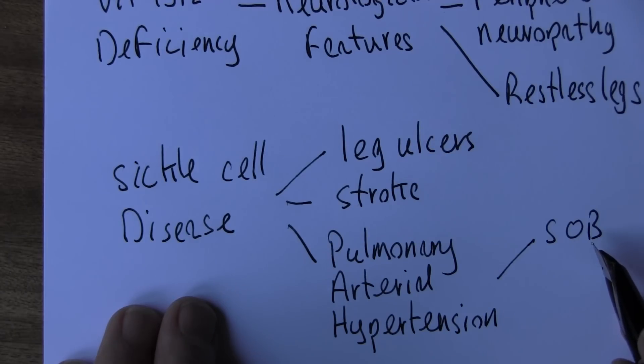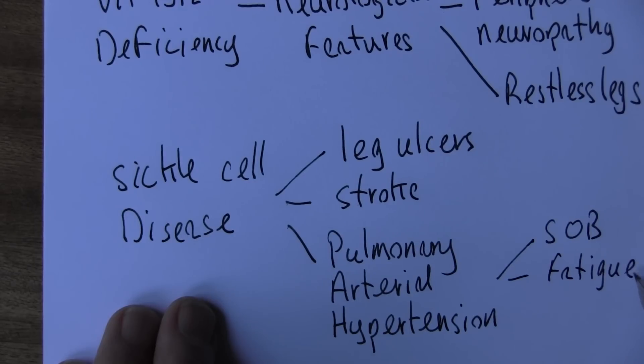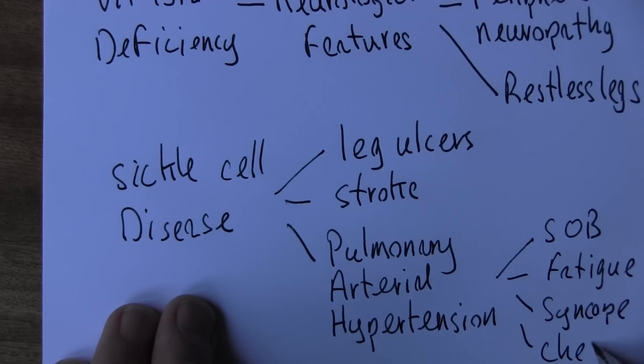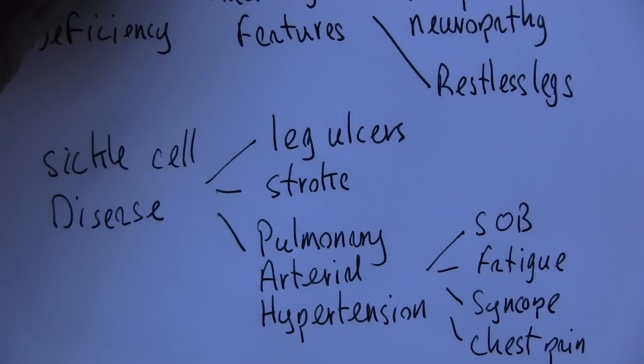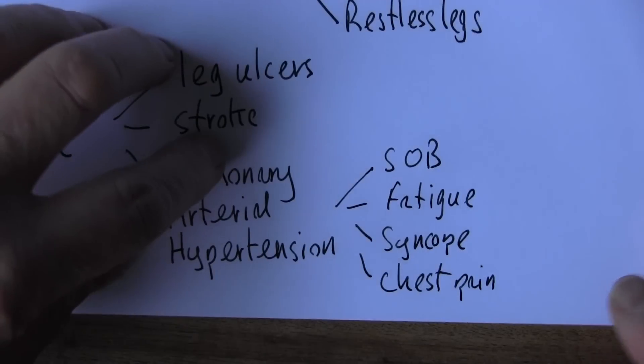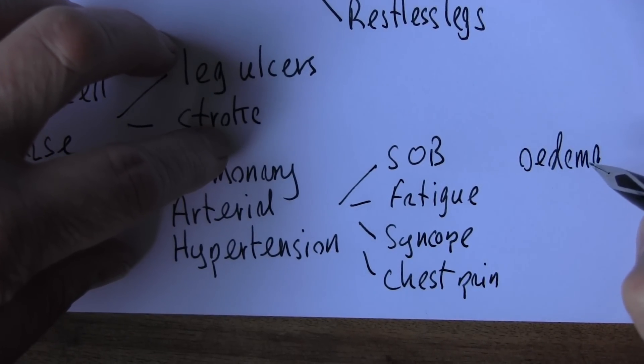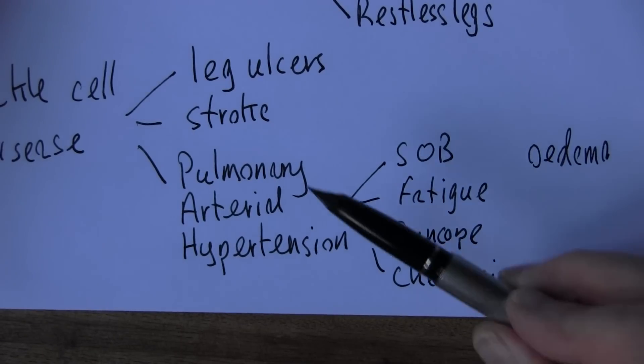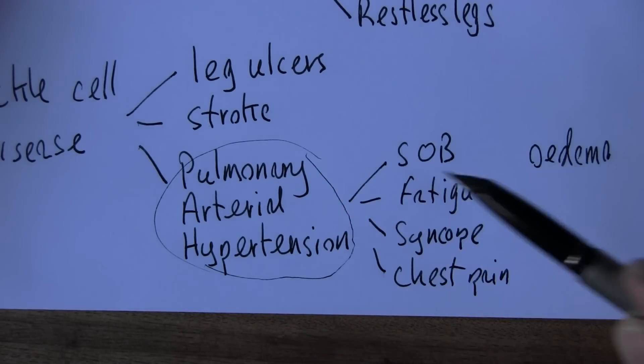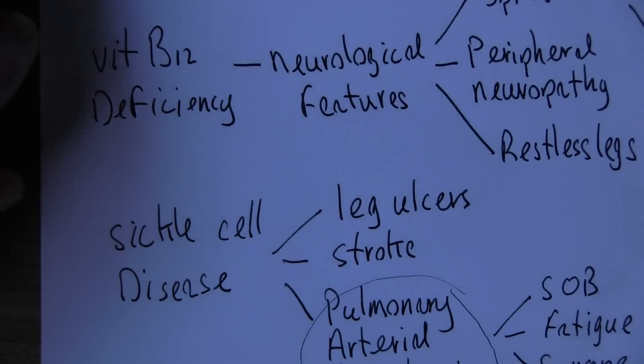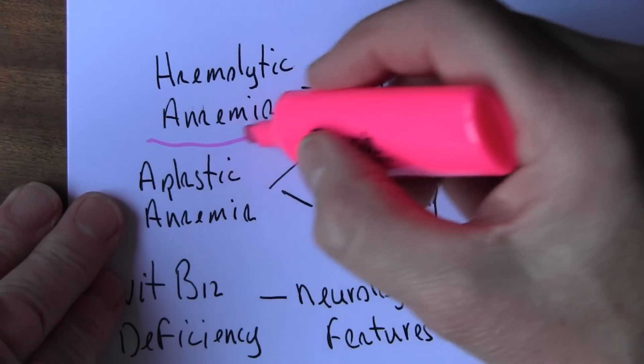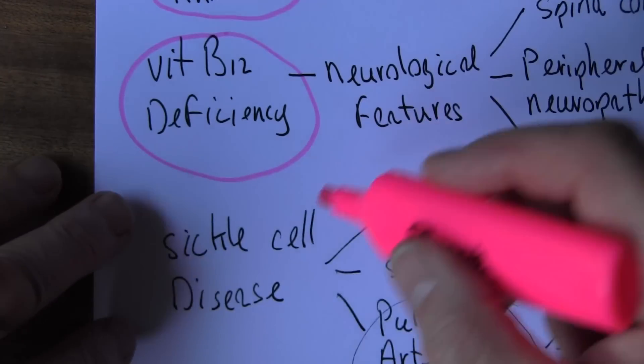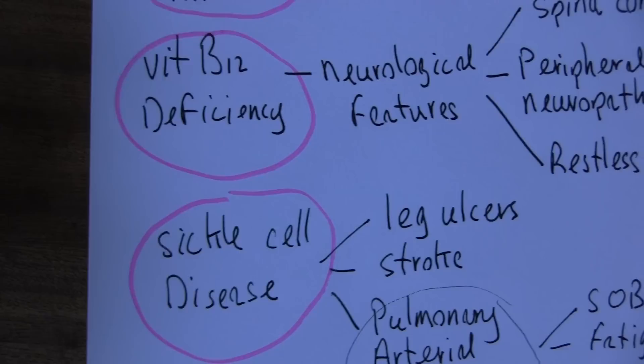Syncope, chest pain, chest tightness especially. It can lead on to systemic edema, cyanosis, tachycardias. If you want to know that in detail, look at the features of pulmonary arterial hypertension. But the point is all these things, the hemolytic anemia, the aplastic anemia, the vitamin B12 deficiency, the sickle cell disease, all have their own ranges of clinical features.